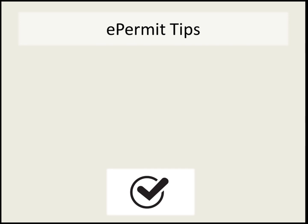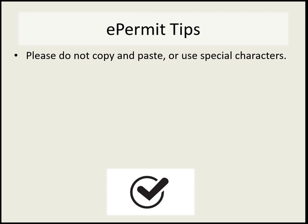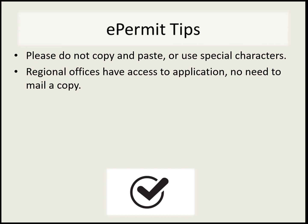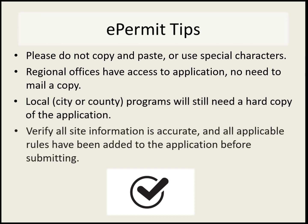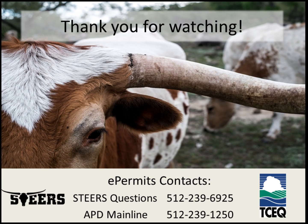A few tips for submitting e-permit applications through STEERS: avoid copy and pasting or using special characters when filling in information fields. Regional offices have access to the application, no need to mail a copy. Local, city, or county programs will still need a hard copy of the application. Please verify all site information is accurate and all applicable rules have been added to the application before submitting. At the bottom of this page are some helpful contact numbers if you should come across any problems during your application submittal process.